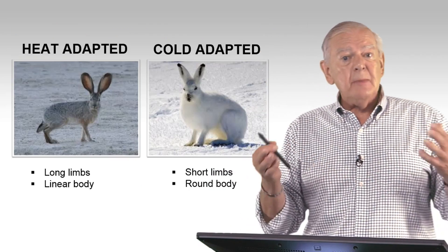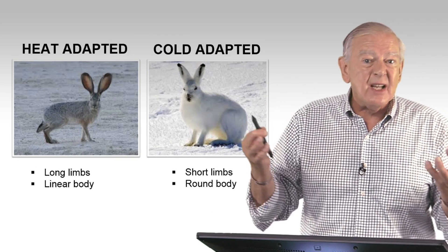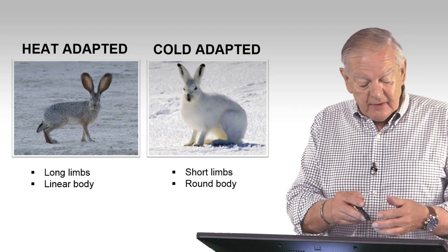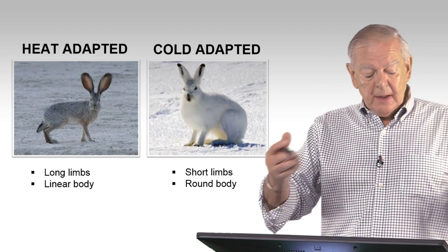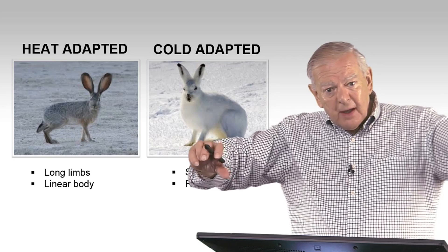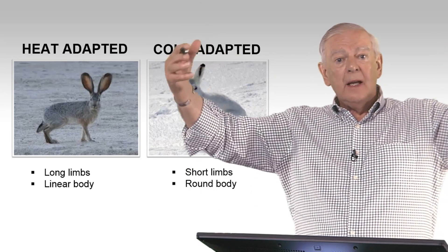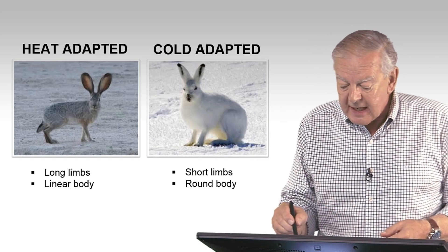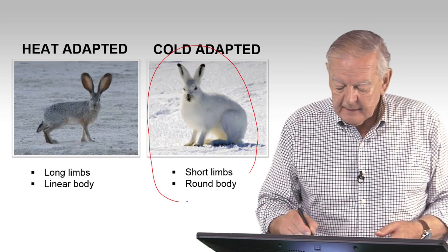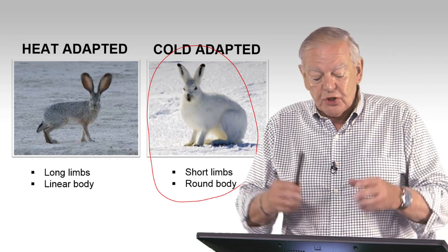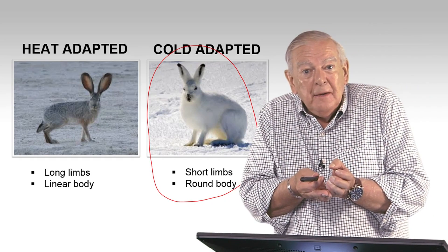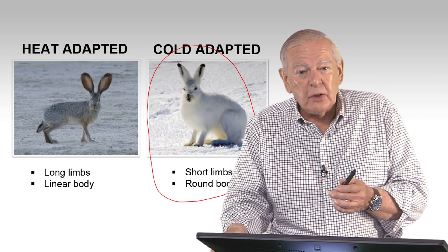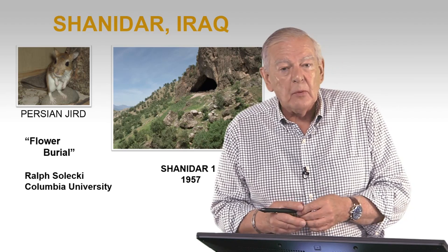Look at some animals that reflect this kind of physiological adaptation. Animals that live in hot environments, like this particular rabbit or hare, have long limbs and a long linear body to dissipate the heat and be able to live in the desert. Whereas a cold-adapted hare, like this arctic hare, has short limbs and a round body. So it seems to work — and that may be why Neanderthals and us look so different because of the environment in which they lived.